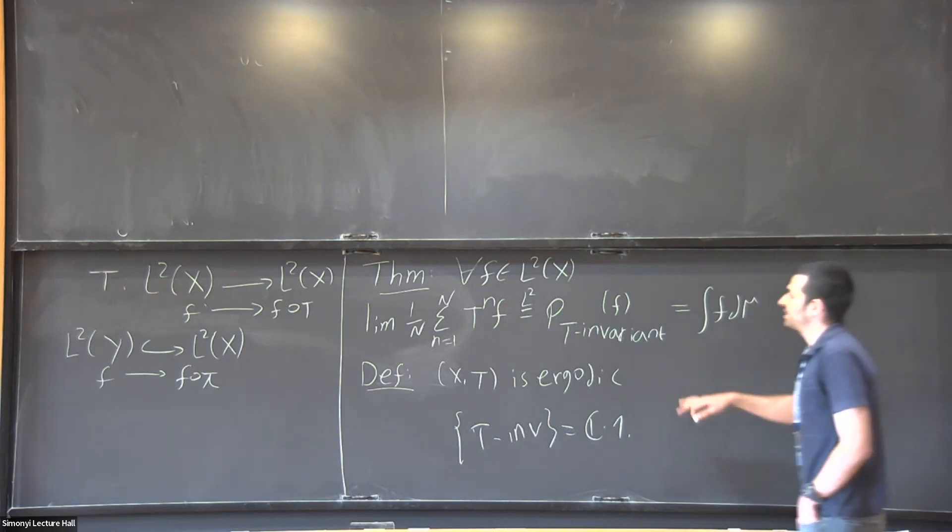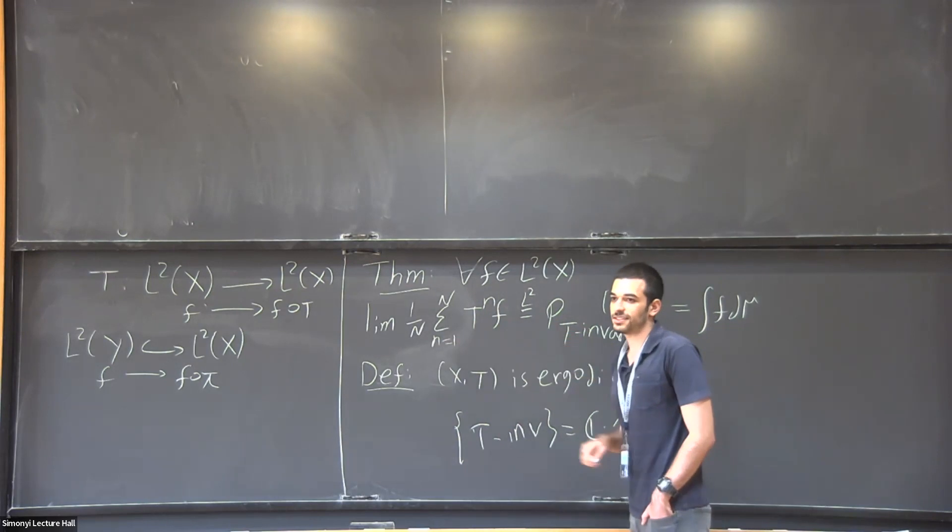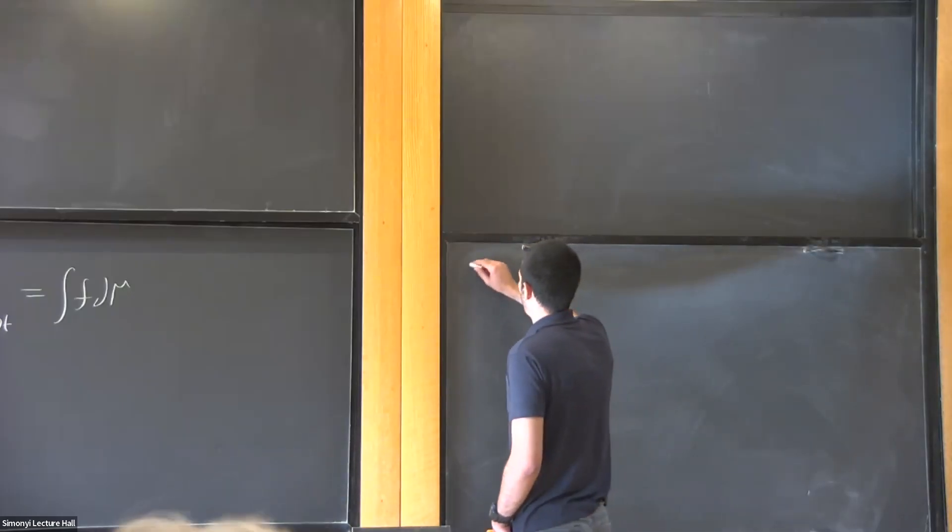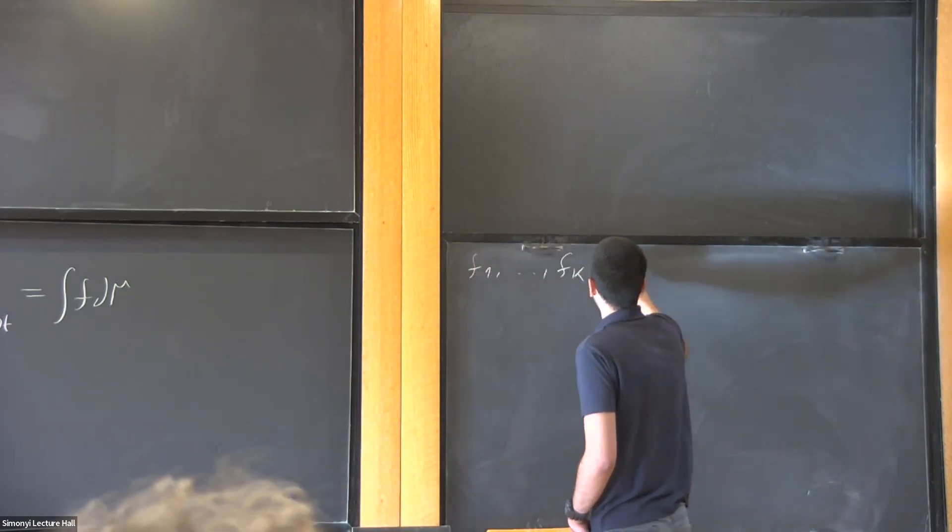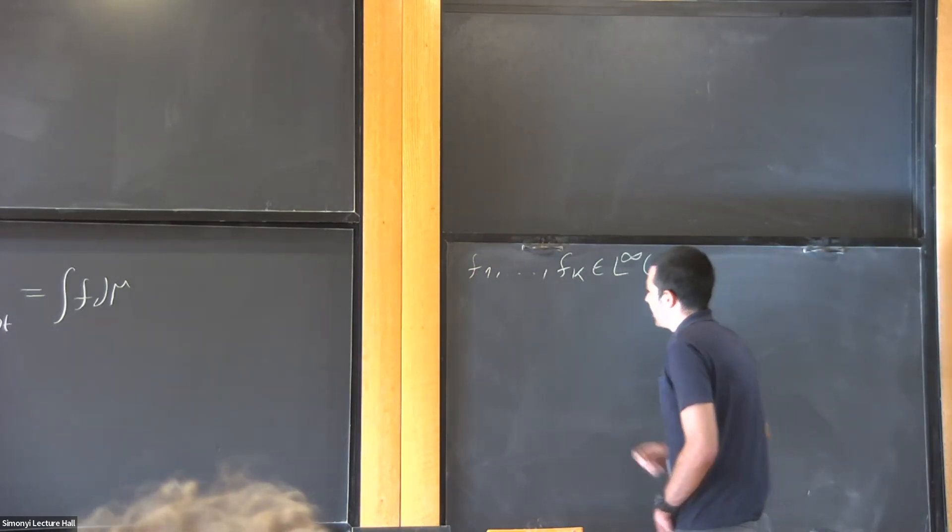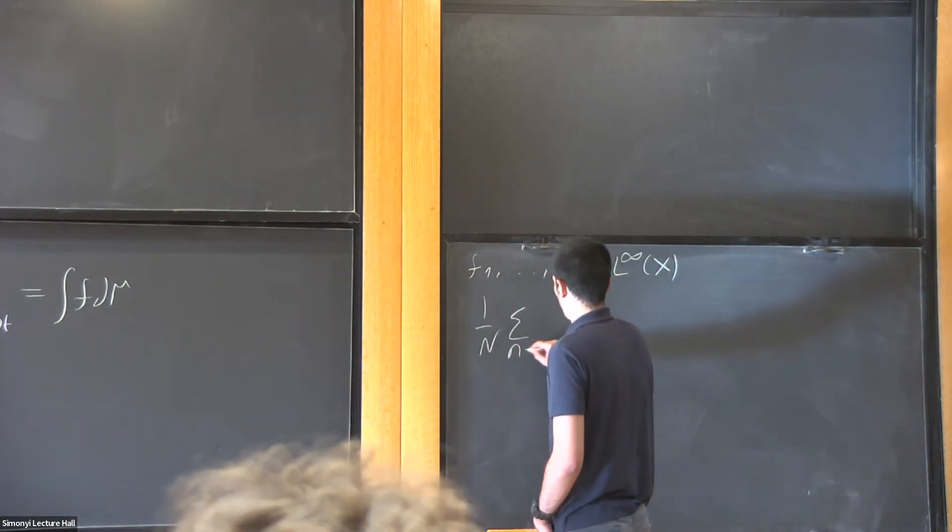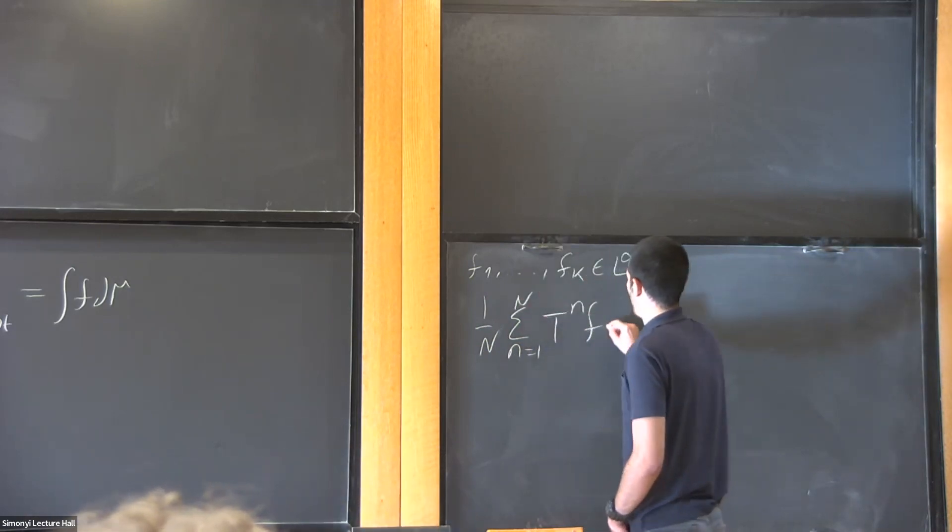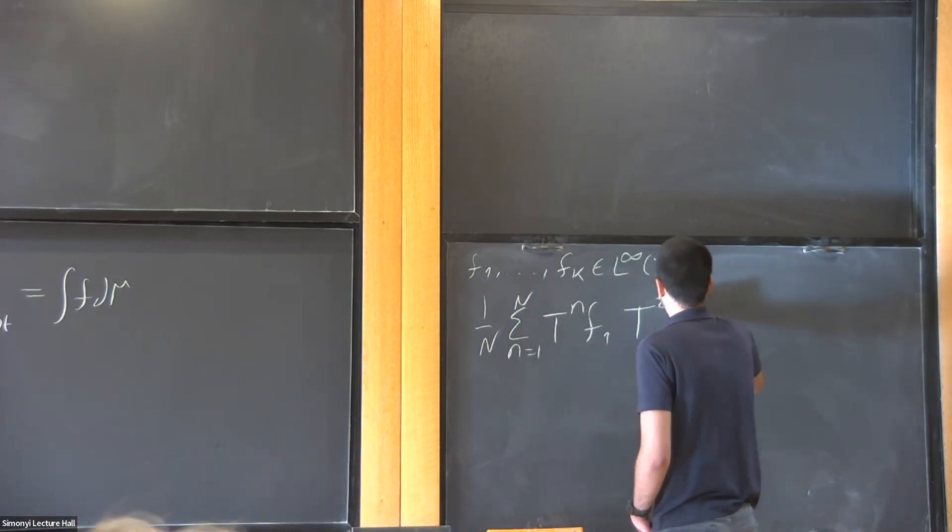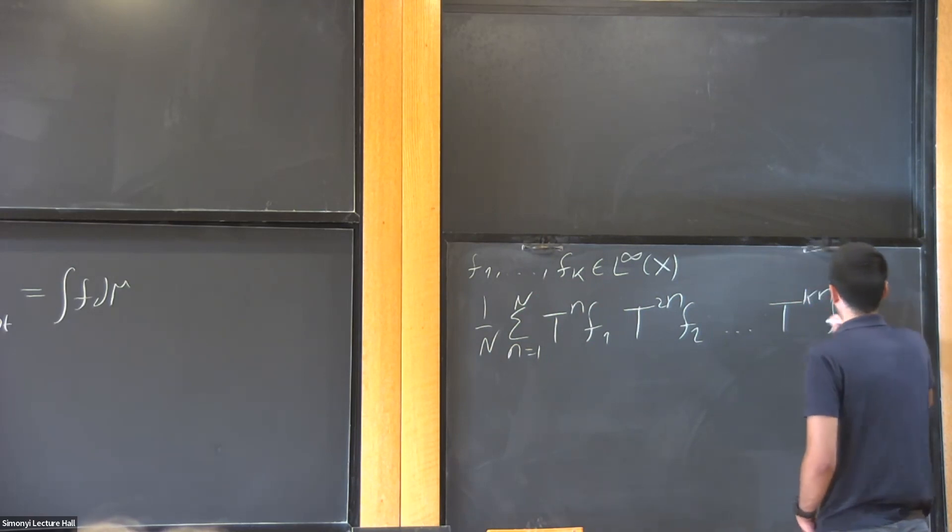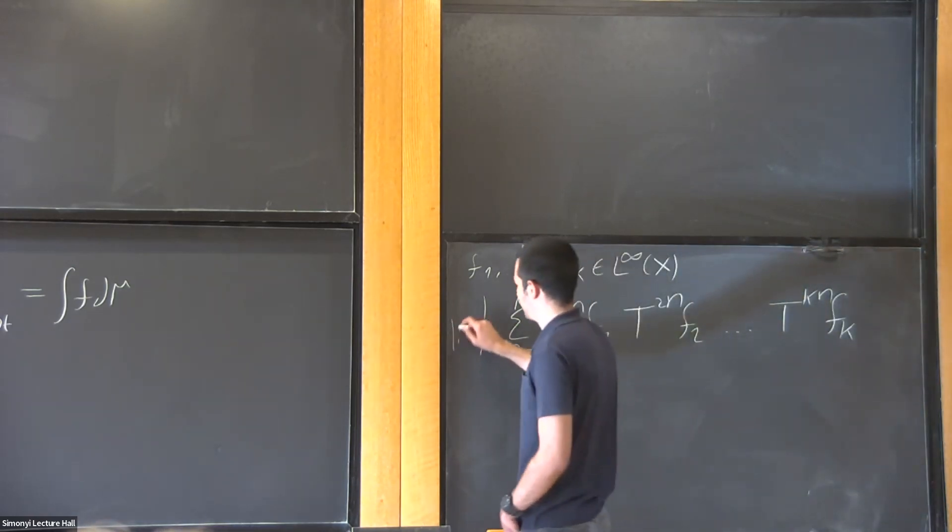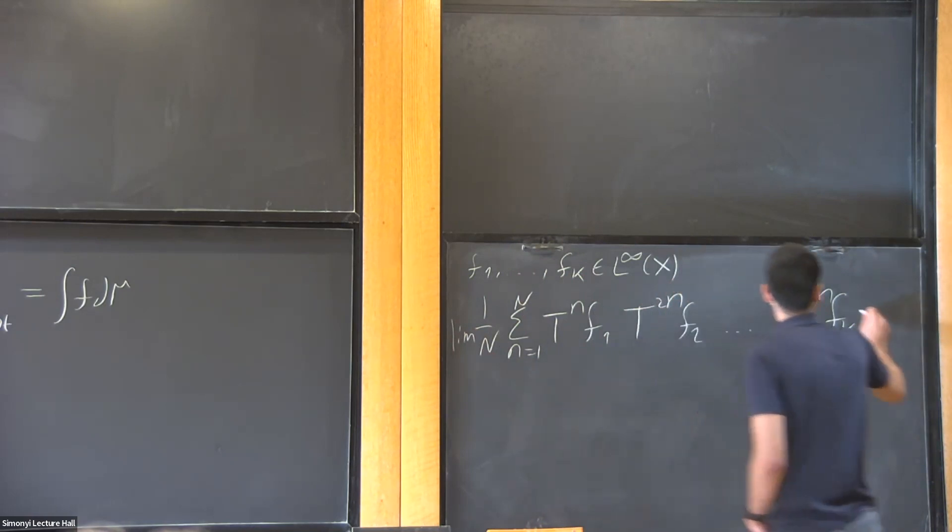Now, Furstenberg was interested in a generalization of this average to longer progressions, and this is somewhat related to a similar distribution that Florian and Ethan told you about. So Furstenberg asked the following question: let's take k functions, now bounded so we can multiply, and ask if we can say anything about the following average. We apply T to the n to f1, T to the 2n to f2, and T to the kn to fk. So we can ask whether the limit exists, and if it exists, what's the limit?